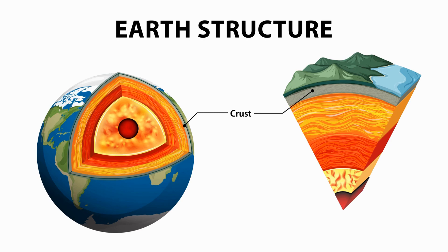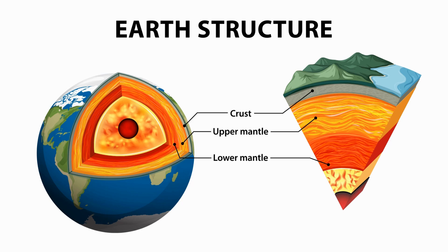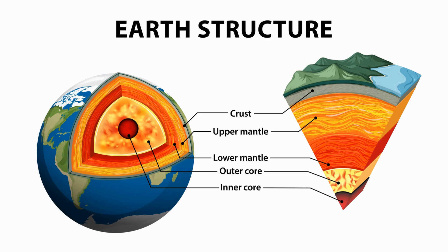The Earth's crust is what we walk on every day and it is the most widely studied and understood layer of the Earth. The mantle is the layer situated between the crust and the core — much hotter and able to flow, divided into two main parts based on depth and physical properties. The center of the Earth is divided into the outer core and the inner core, which are extremely hot and under such high pressure that you would be squished into a tiny ball smaller than a marble.